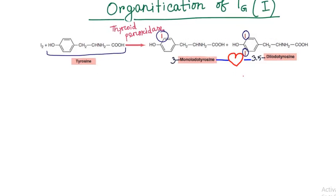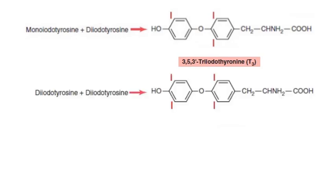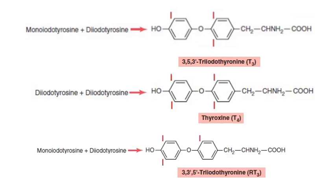If one monoiodotyrosine binds with one diiodotyrosine, triiodotyrosine will be formed. This molecule is called T3. If two molecules of diiodotyrosine bind together, thyroxine or T4 will be formed. Some amount of reverse T3 is also formed by coupling of diiodotyrosine with monoiodotyrosine.